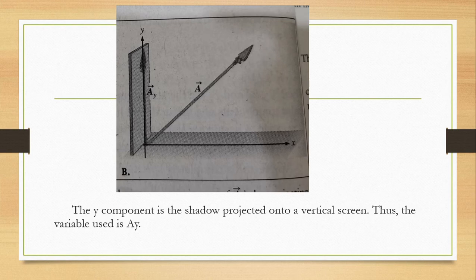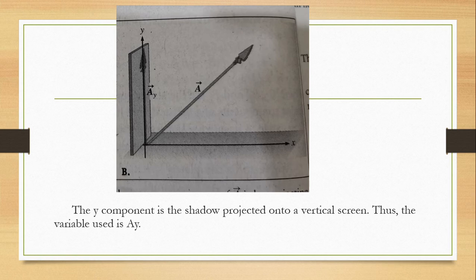A vector will have components along both the x and y axis only when it is diagonal — pointing northeast, northwest, or southeast. As long as the vector is diagonal, meaning it falls in the first, second, third, or fourth quadrant of the coordinate system, it will have components along both axes. But once the vector is perfectly horizontal or perfectly vertical, it has only one component: either Ax with Ay equal to zero, or Ay with Ax equal to zero.